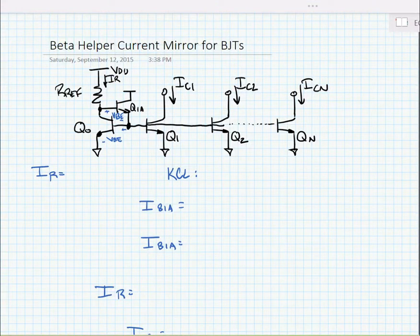In the last video, we saw that when we generated a lot of different output currents from a single reference generator, we had some systematic error.